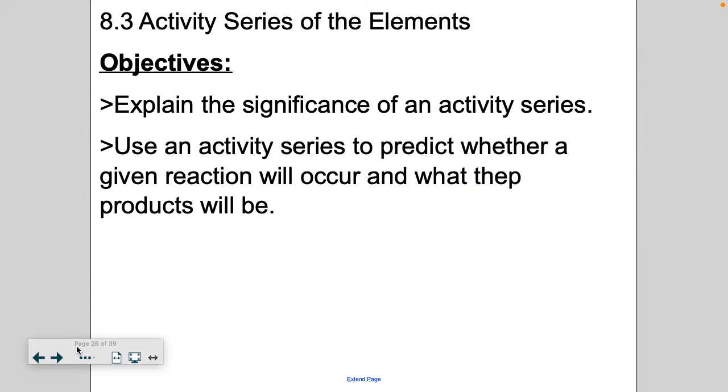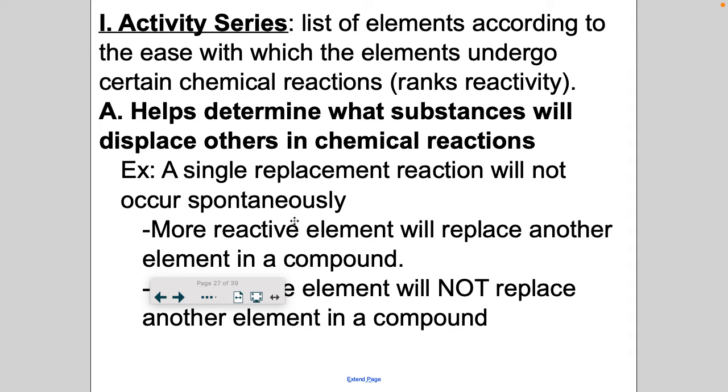Okay, so today's learning objective: talk about an activity series and how we use it to predict whether or not a chemical reaction will take place. So the definition of an activity series is basically there's this list of elements and it ranks how reactive they are. Where it is on the list, top versus bottom, will help us predict whether or not a single replacement reaction will occur.